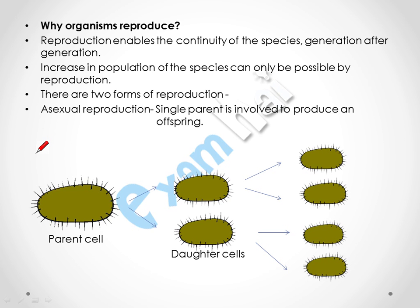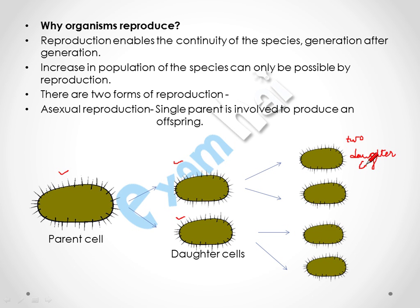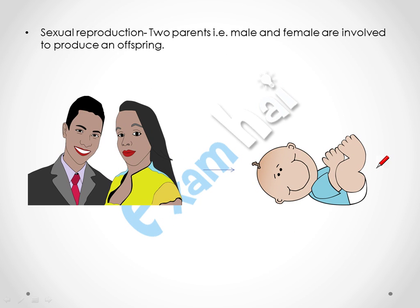Reproduction is of two types: asexual reproduction and sexual reproduction. In this diagram you can see a parent cell gives rise to two daughter cells, which again get matured and become a parent cell and produce two daughter cells. The second mode is sexual reproduction, in which two parents — one male and one female — are required to produce an offspring.